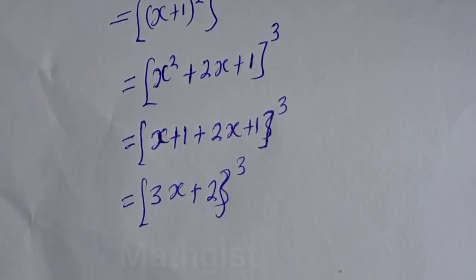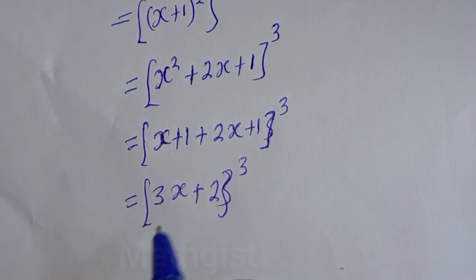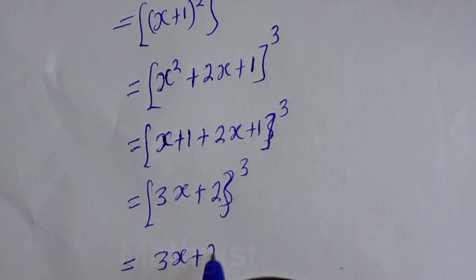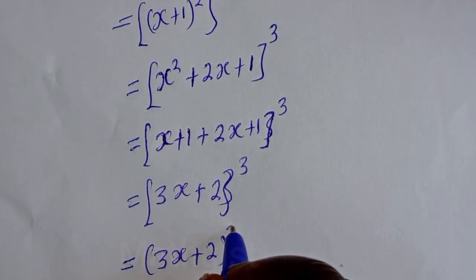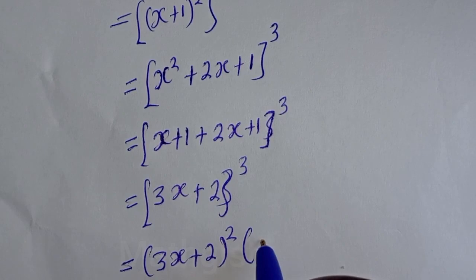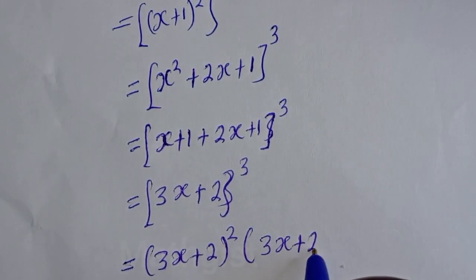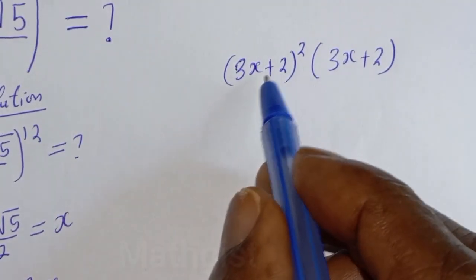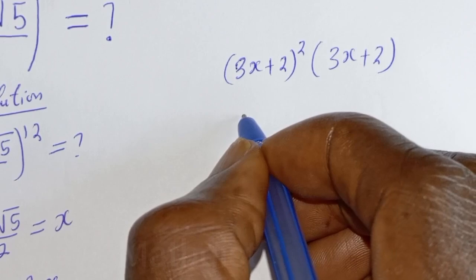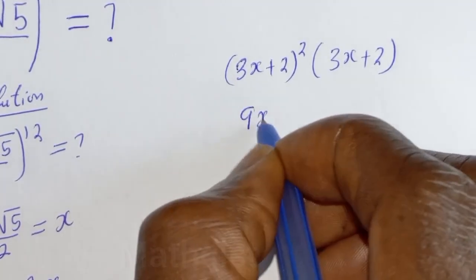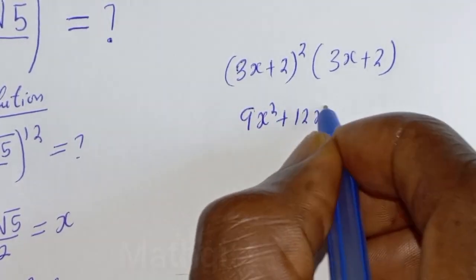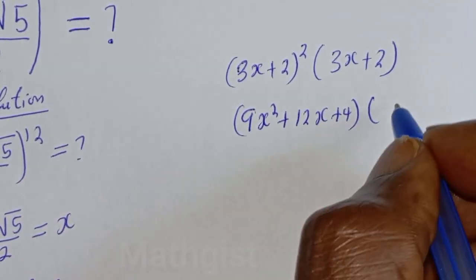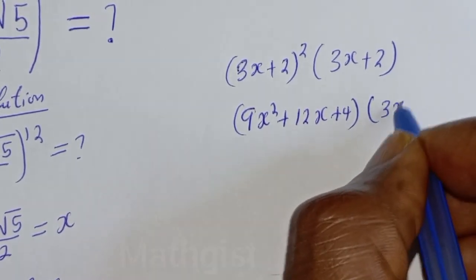Then (3x plus 2) to the power of 3 can be written as (3x plus 2) squared multiplied by (3x plus 2). Expanding (3x plus 2) squared gives 9x squared plus 12x plus 4, multiplied by (3x plus 2).